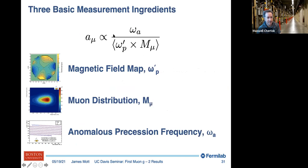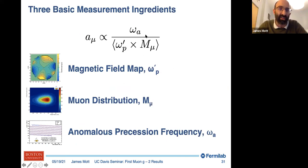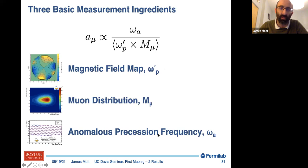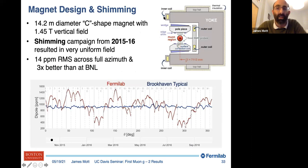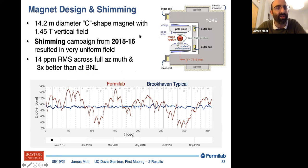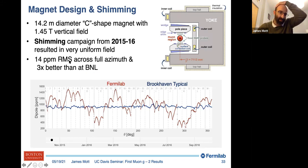There are three ingredients we need: the precession frequency, knowledge of the magnetic field, and knowledge of where the muons are within that field. Starting with the magnetic field map — omega_p-prime — we wanted a nice uniform field, and after the 2015-16 shimming campaign we ended up with a field uniform to only 14 parts per million RMS around the azimuth, three times better than Brookhaven. I'll show a brief video of the progress of shimming over time.